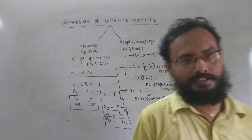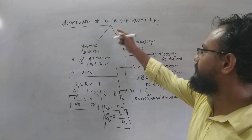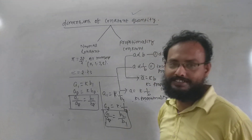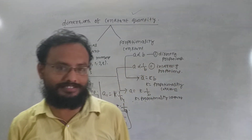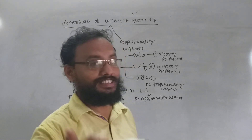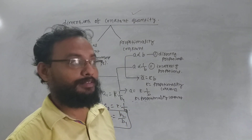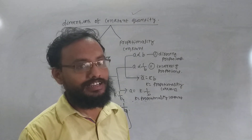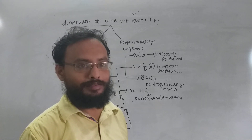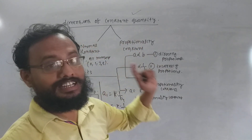Now, students, see the dimensions of some constant quantity. You see this — you have to tell the same thing. So, a constant quantity is a problem. How can you explain that your physical quantity has a problem? It just means dimensions. So, what are the dimensions of this constant quantity?